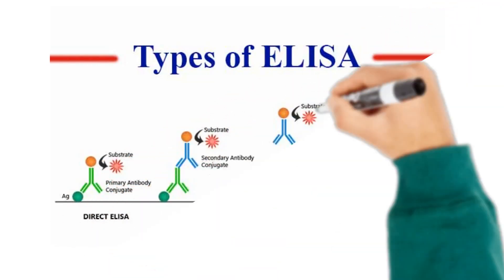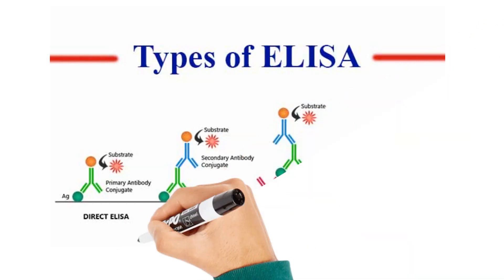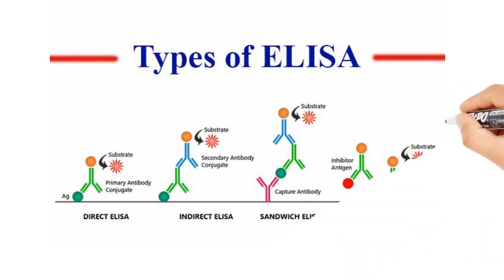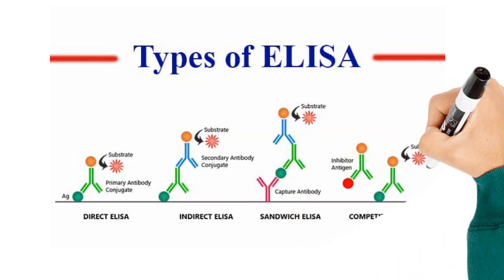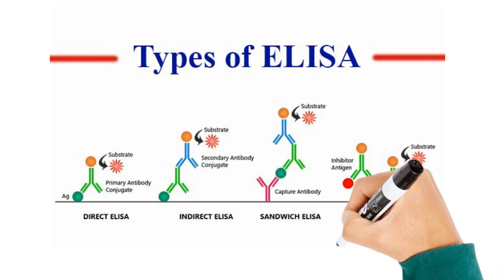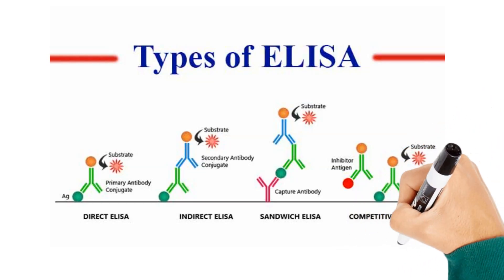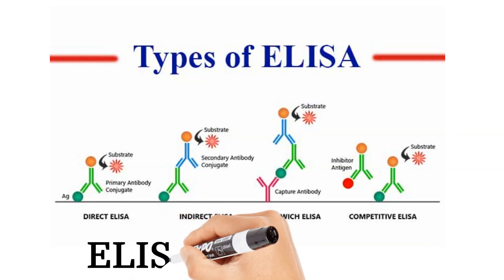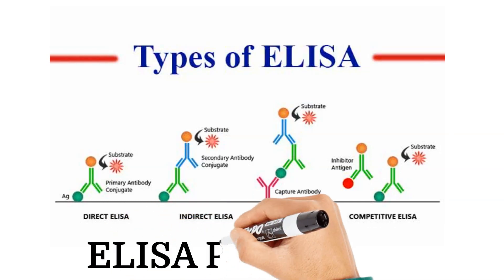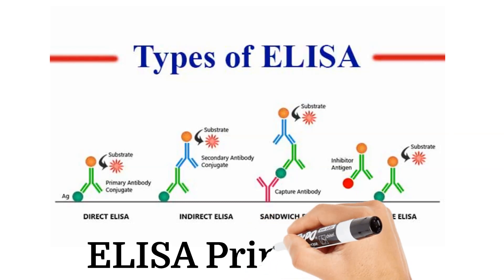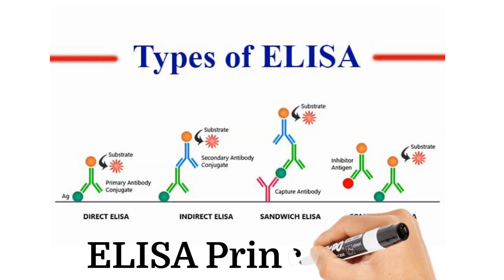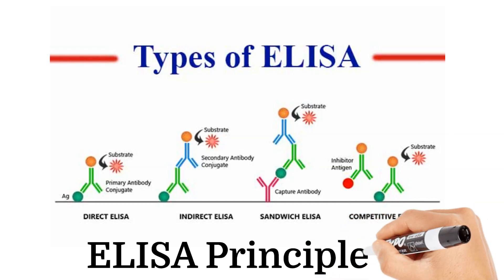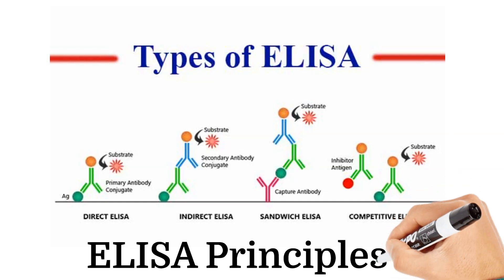Sandwich-type ELISA is the most popular format for insulin determination. It involves a capture anti-insulin antibody immobilized on a plate and a labeled detector anti-insulin antibody such as a peroxidase label. Insulin reacts with both antibodies, unbound antibodies are washed away, and a chromogenic substrate is added to react with the antibody-antigen complex. The reaction is stopped with acid and the colored products are measured using a spectrophotometer, with the signal correlating to insulin concentration.